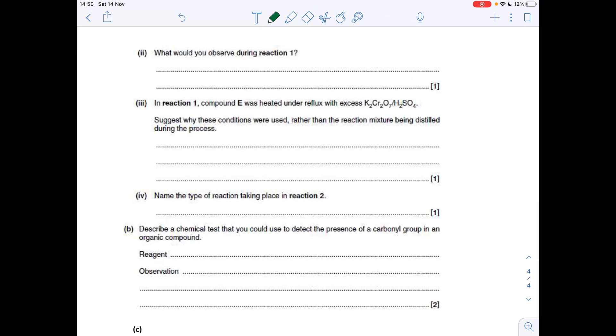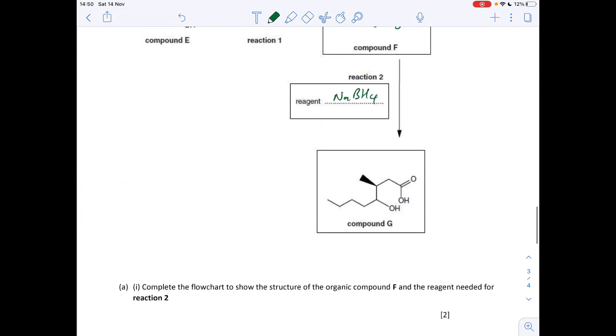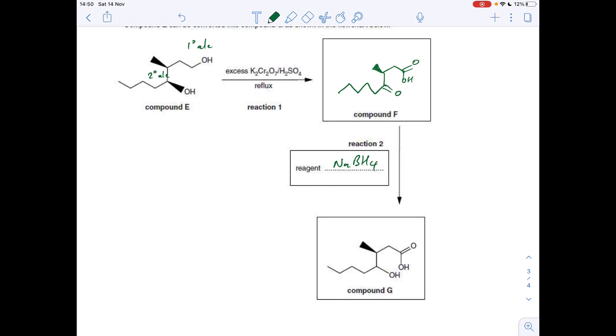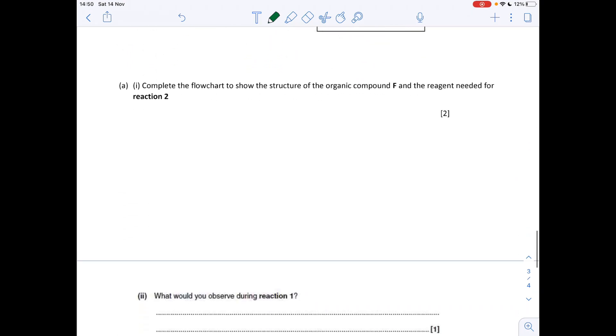What would you observe during reaction 1? So reaction 1, you've got the acidified potassium dichromate reacting, and it goes from orange to green.